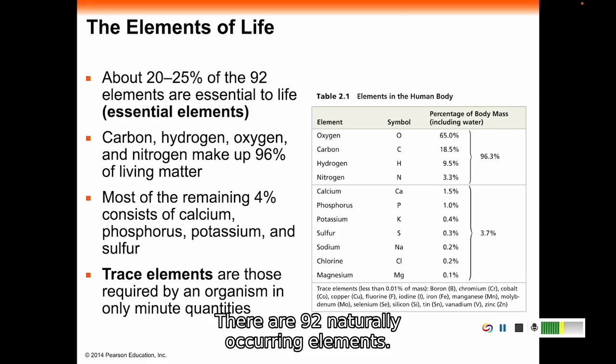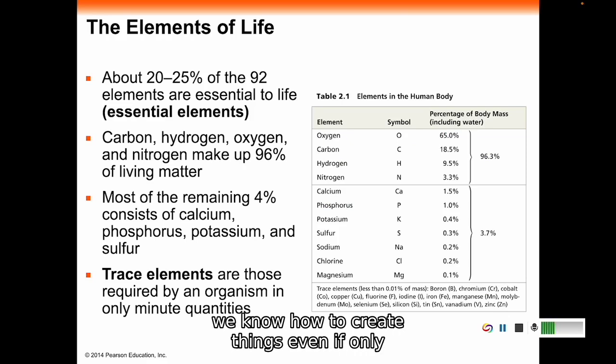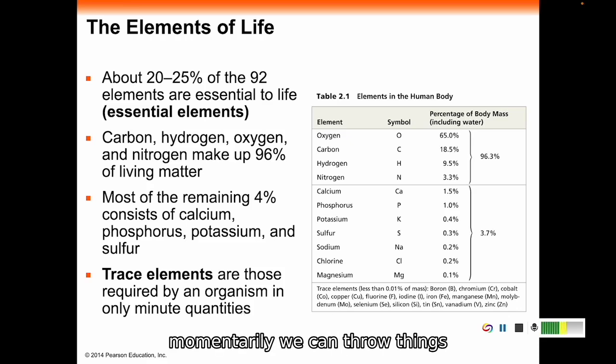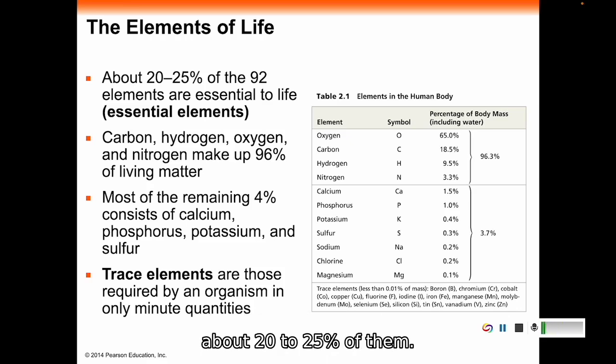There are 92 naturally occurring elements. If we look at a periodic table, there's probably more than 92 elements on there because in the laboratory we can create things. We can throw things together and force them into creating new atoms. But 92 elements are naturally occurring in nature. About 20 to 25% of them are essential to life.